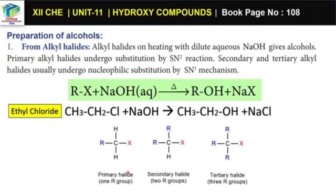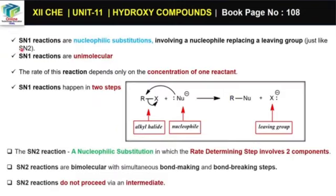What is SN1 and SN2? The alkyl halogen attached undergoes SN1 — unimolecular nucleophilic substitution reaction. SN1 reaction involves the nucleophile replacing the leaving group, just like SN2. In SN1, the nucleophile replaces the leaving group.